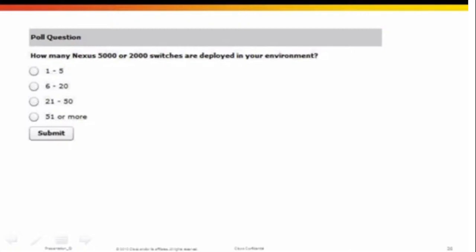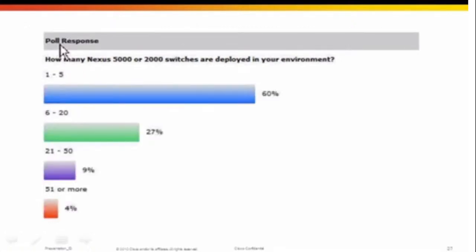Let's go to our last polling question: How many Nexus 5000 or 2000 series switches are deployed in your environment? 1 to 5? 6 to 20? 21 to 50? 51 or more? Let's have a look at the results. I'll hand the mic back to Lucien and we'll wrap up the presentation.